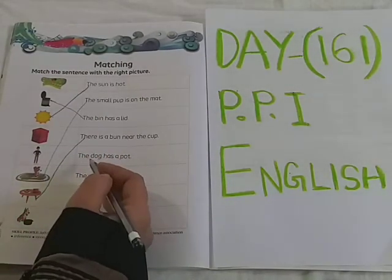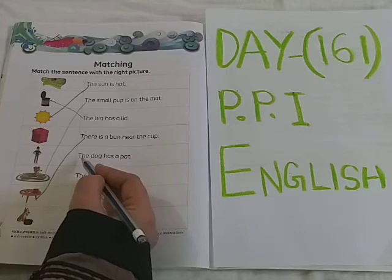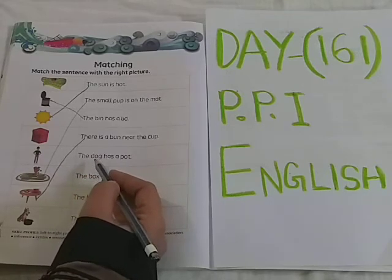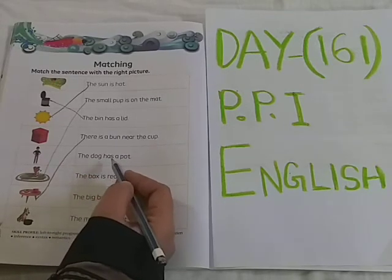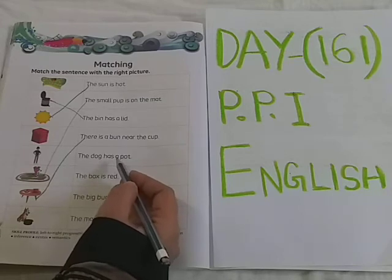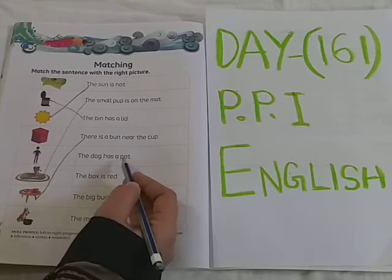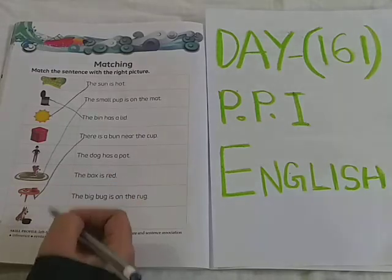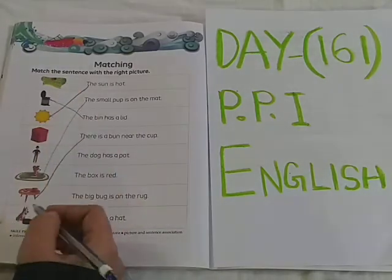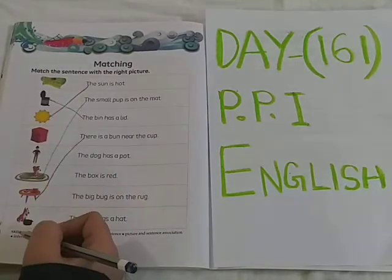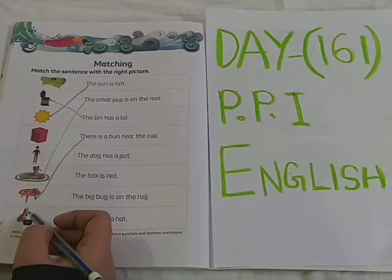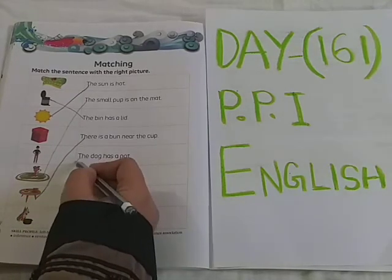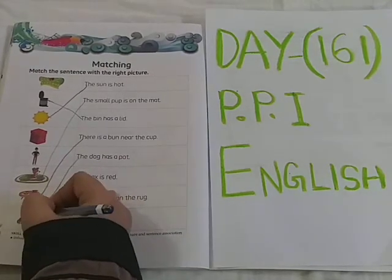Read the next sentence now. T-H-E — The. D-O-G — Dog. The dog. H-A-S — Has. A. P-O-T — Pot. The dog has a pot. Where is the dog which is having the pot? See here in the picture. The dog has a pot. So let's match the sentence with the picture.